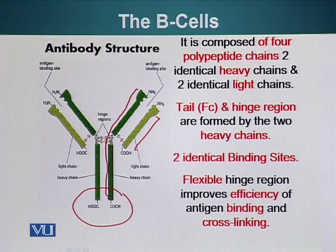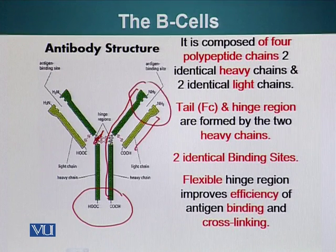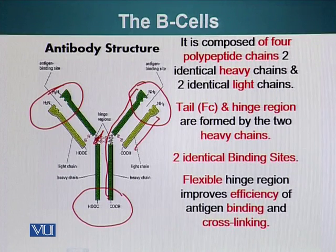This is the hinge region. The hinge region plays a very important role in the functioning of the antibody because it makes the antibody flexible and increases its ability to bind antigens. The two binding sites on the antibody are identical — here is site one and here is site two. Flexibility of the hinge allows these antigen binding regions to cross-link different antigens.